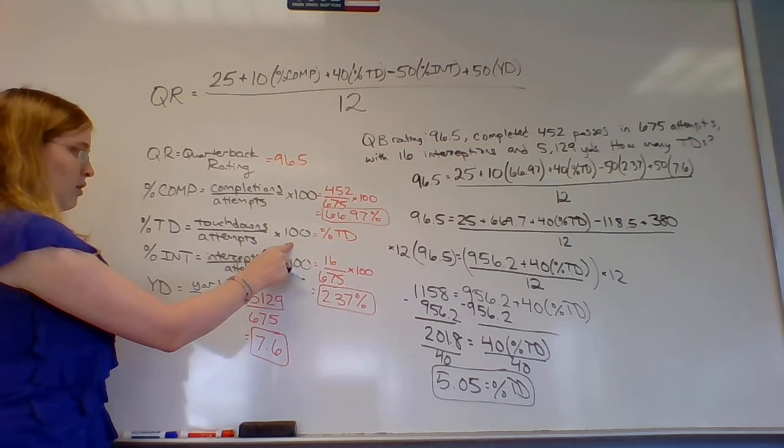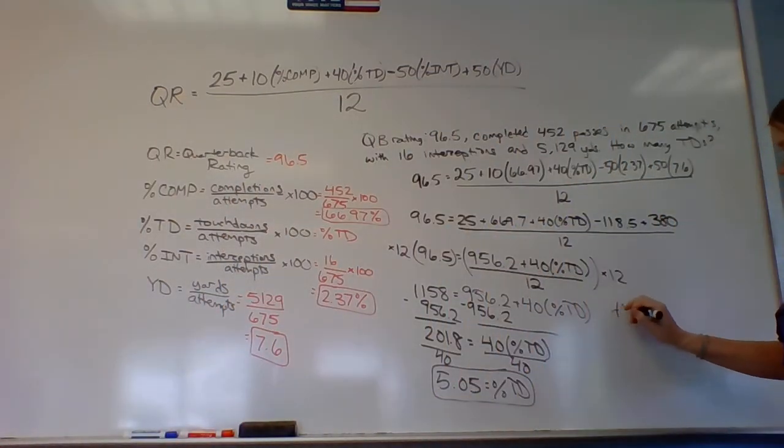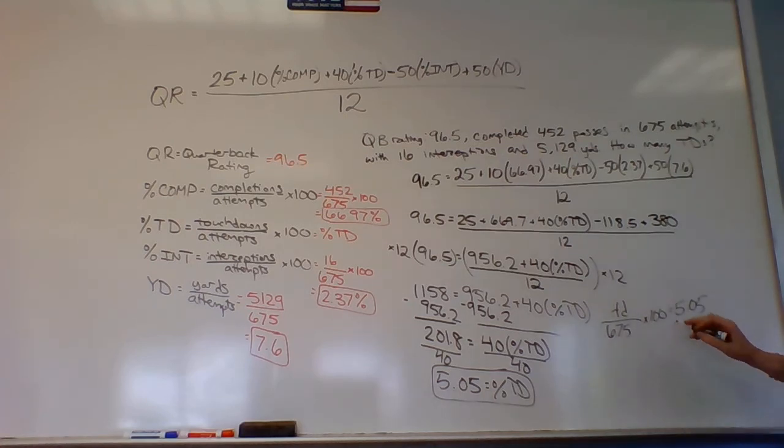Now we're almost done. All that we need to do is solve this. Touchdowns over attempts, and our attempts was 675, times 100 equals 5.05. If we get rid of the 100, we move this over two spaces. Touchdowns over 675 equals 0.0505. And last but not least, multiply both sides by 675. That cancels out. 675 times 0.0505 is 34.09, aka 34 touchdowns.